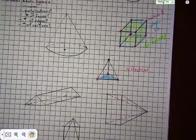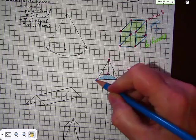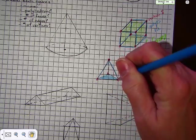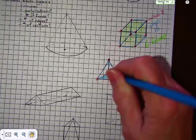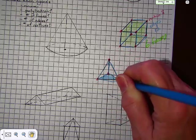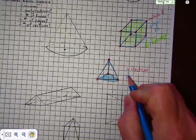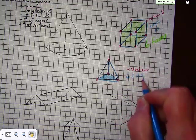Edges, you have, you have an edge here, edge here, edge here. That's three, four, five, six. So we have six, so we have six edges.